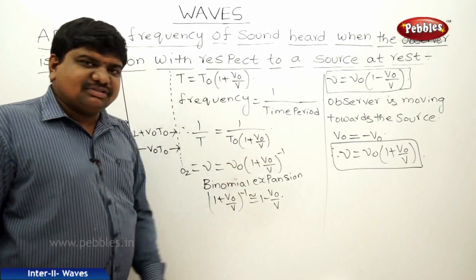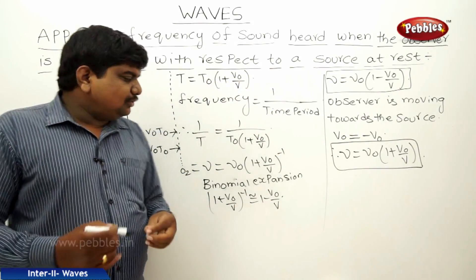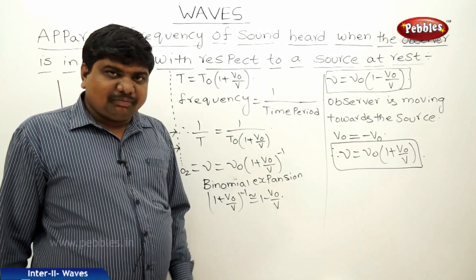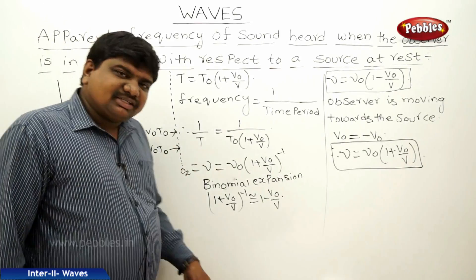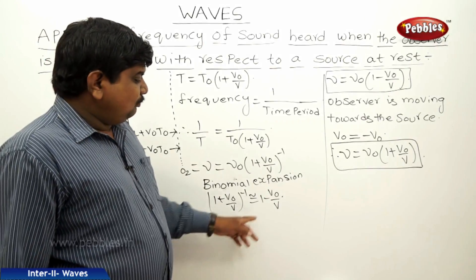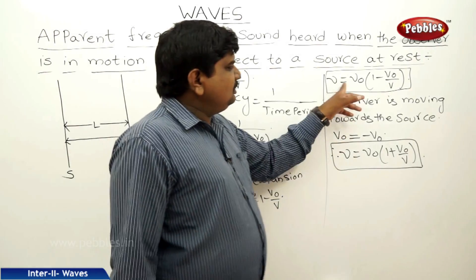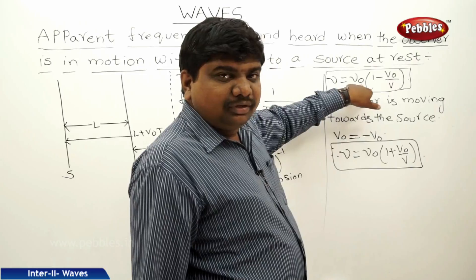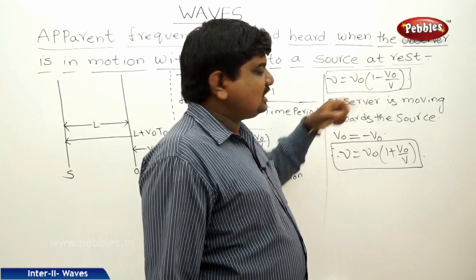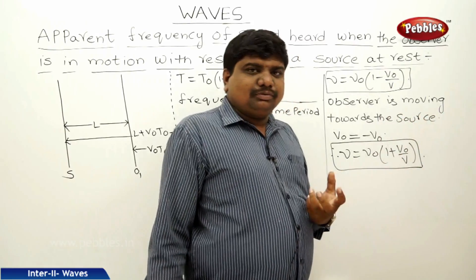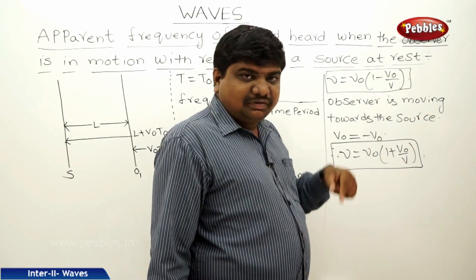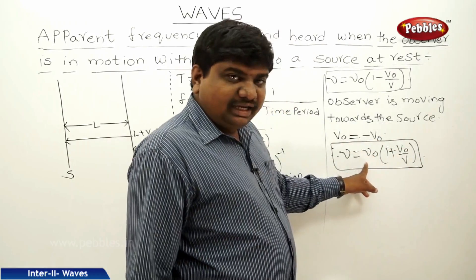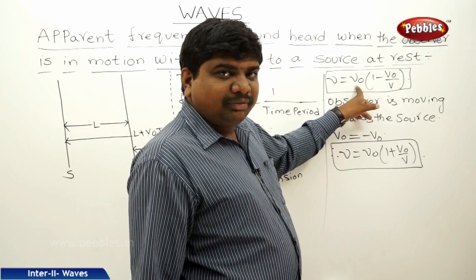To summarize: when the observer moves away, T = T0 · (1 + V0/V), and ν = ν0 · (1 − V0/V) — this gives the lowest apparent frequency. When the observer moves toward the source, ν = ν0 · (1 + V0/V) — this gives the highest apparent frequency.